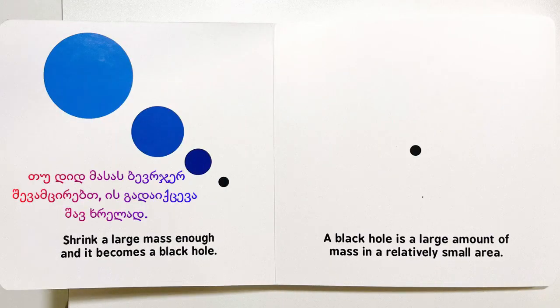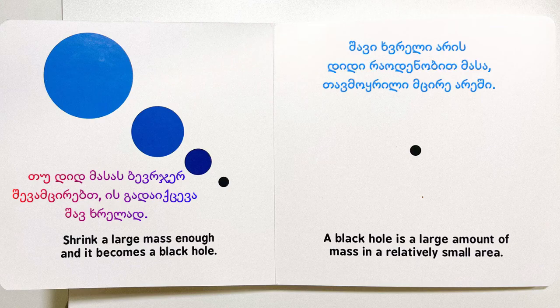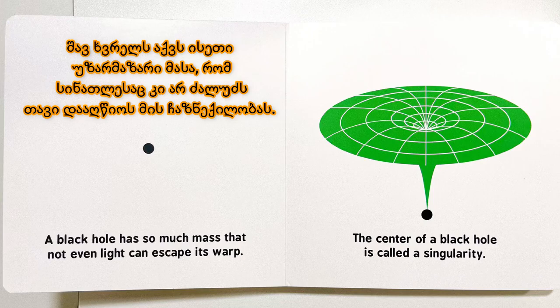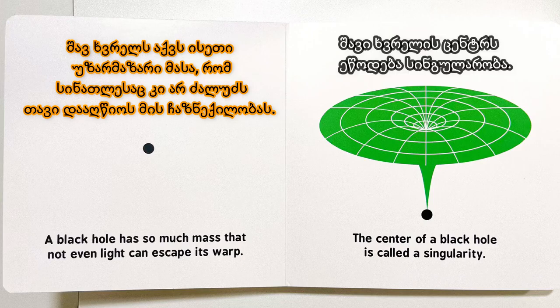Shrink a large mass enough, and it becomes a black hole. A black hole is a large amount of mass in a relatively small area. A black hole has so much mass that not even light can escape its warp. The center of a black hole is called a singularity.